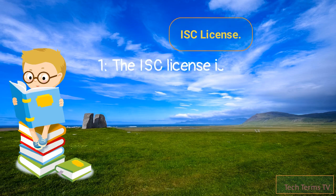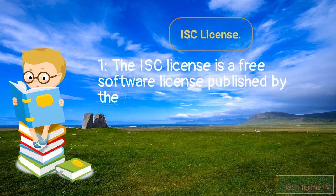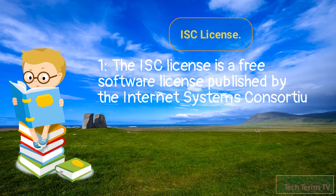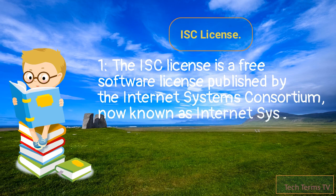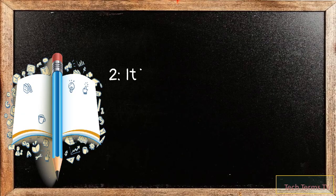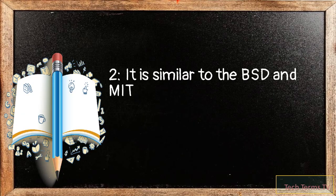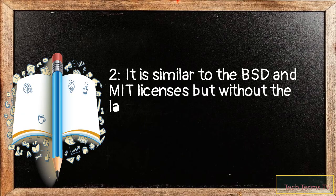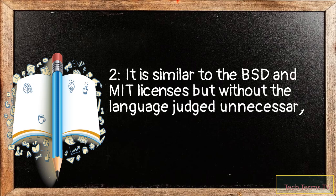The ISC License is a free software license published by the Internet Systems Consortium, now known as ISC. It is similar to the BSD and MIT licenses, but without the language judged unnecessary by the Berne Convention.